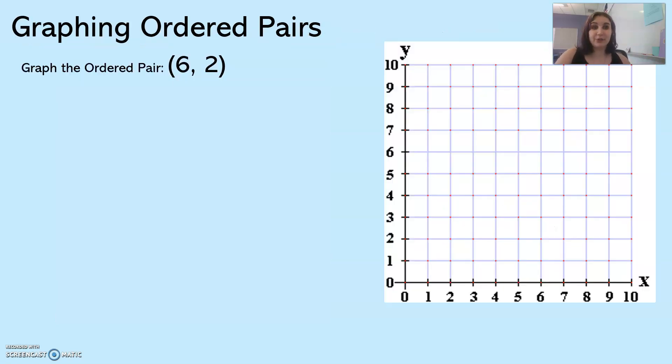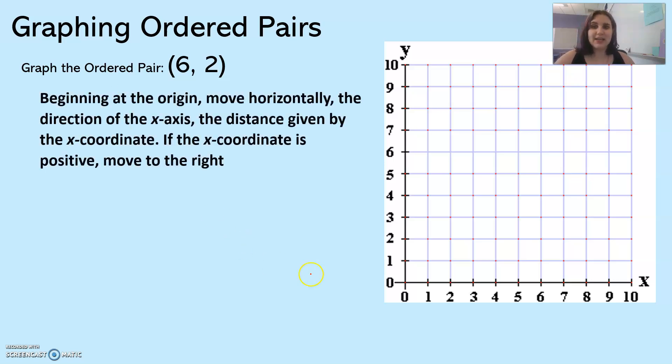What about graphing an ordered pair? I'm not given one on the graph, but I'm given the ordered pair, so now I need to put it on the graph. Beginning at the origin, move horizontally the direction of the x-axis the distance given by the x-coordinate. The x-coordinate is six. If the x-coordinate is positive, move to the right. We're going to move to the right six.